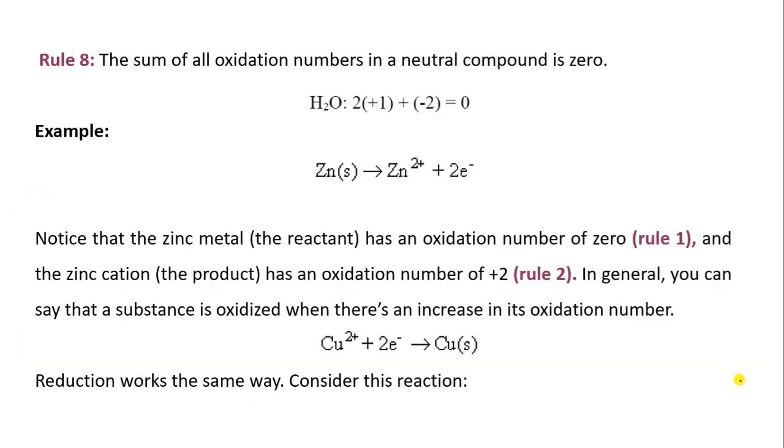Now rule 8. The sum of all oxidation numbers in a neutral compound is zero. For example, H2O is a neutral compound. When we are doing sum of this oxidation number, it is zero. H2 means 2 atoms are there, so H is plus 1. The oxidation number is plus 1 plus O, and O has always a minus 2. So it is zero.